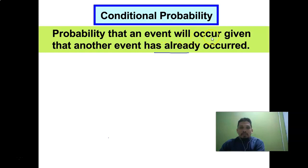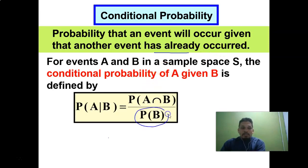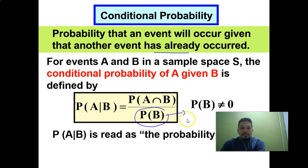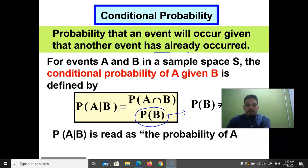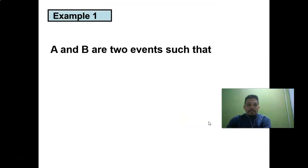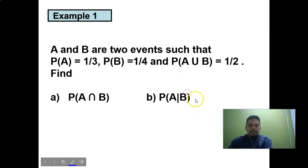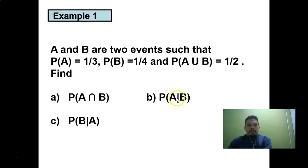Conditional probability is the probability that an event will occur given that another event has already occurred. So probability of A given B — here B is the event that has already occurred and A will occur. Two events A and B are given; find the probability of A intersect B and also probability of A given B.